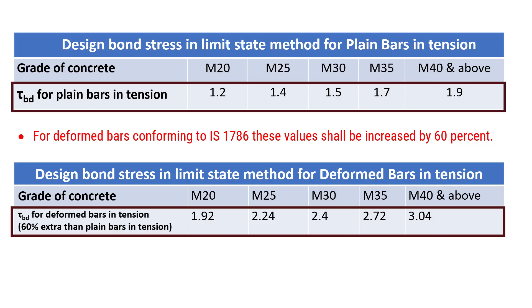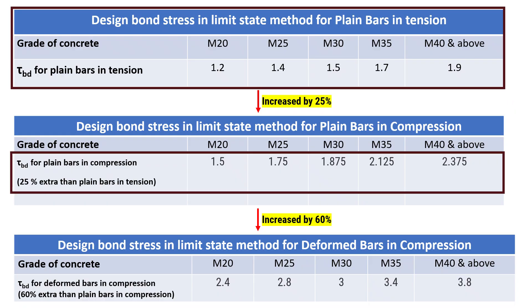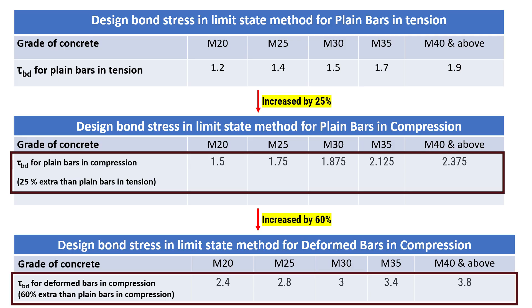For bars in compression, the values of bond stress for bars in tension shall be increased by 25%. The table shows the values of Tau_BD for plain bars in compression to be 25% extra than plain bars in tension. Again, the values of Tau_BD for deformed bars in compression shall be 60% extra than plain bars in compression.